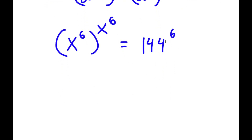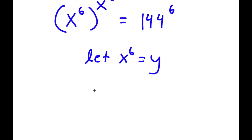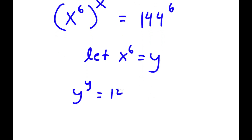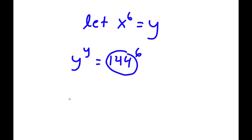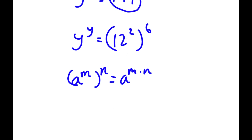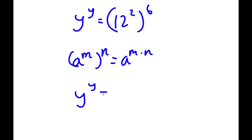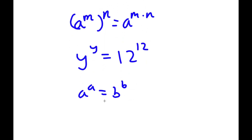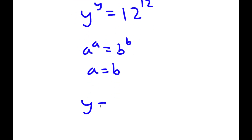Now I'm going to let x to the power of 6 equal y. So I have y to the power of y is equal to 144 to the power of 6. And 144 is the same thing as 12 squared, so I have y to the power of y is equal to 12 squared to the power of 6. Using the exponent rule, 12 to the power of 2 to the power of 6 equals 12 to the power of 12. So I have y to the power of y equals 12 to the power of 12, meaning y is equal to 12.